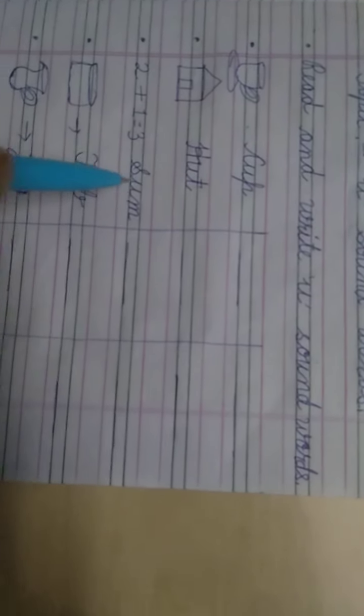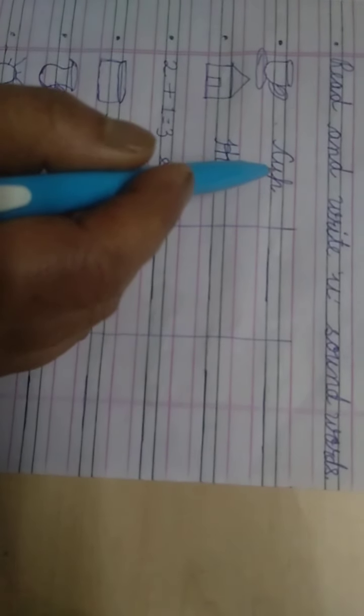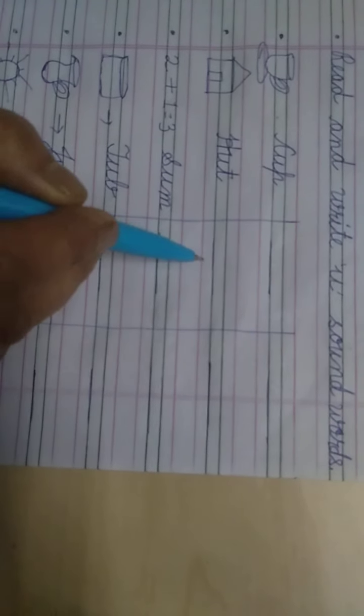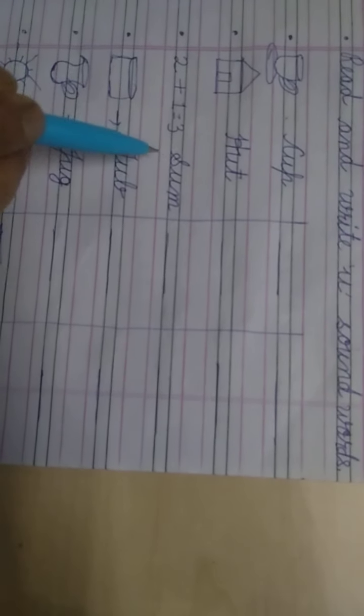Start. Read and write U sound word. U sound word is written. U is in the background, U is in the middle.